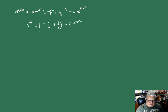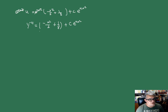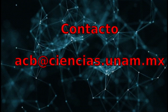Con estos ejemplos podemos parar aquí. En el próximo video vamos a ver las ecuaciones homogéneas, donde utilizaremos algunas propiedades de polinomios homogéneos para inducir una transformación de coordenadas adecuada. Nos vemos en la siguiente sesión.